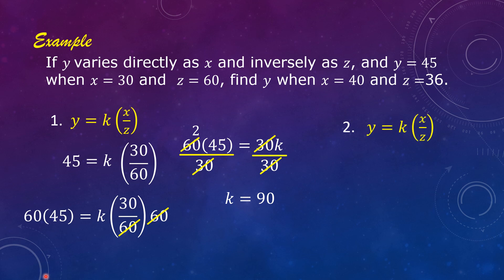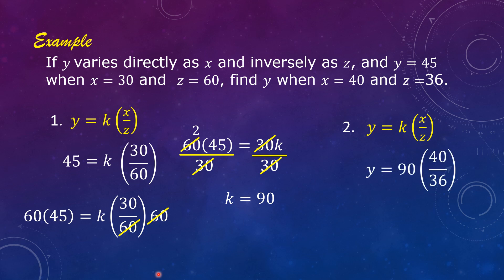Write y is equal to k times the quantity x over z again. Substitute 90 for k, 40 for x, and 36 for z, then solve for y. We have y is equal to 90 times the quantity 40 over 36. 90 times 40 divided by 36 is equal to 100. So y is equal to 100.